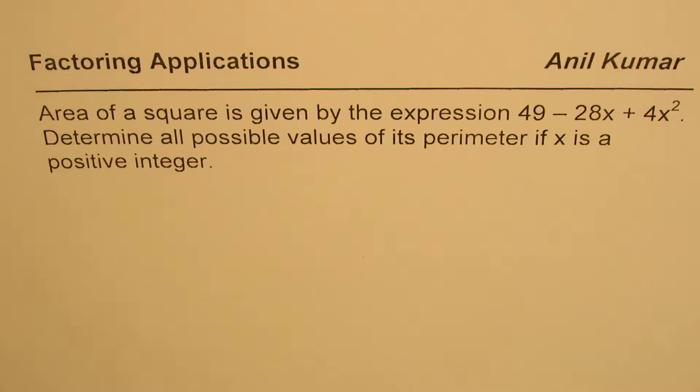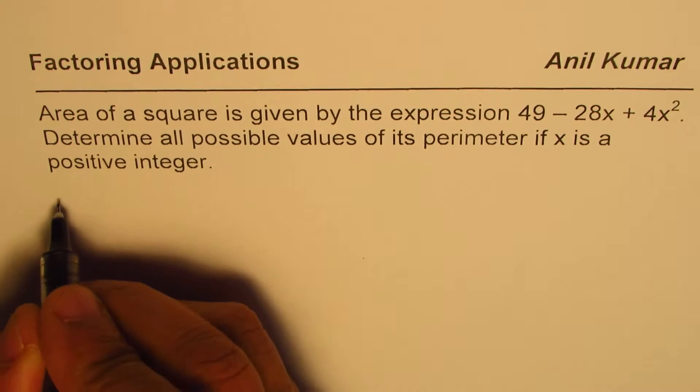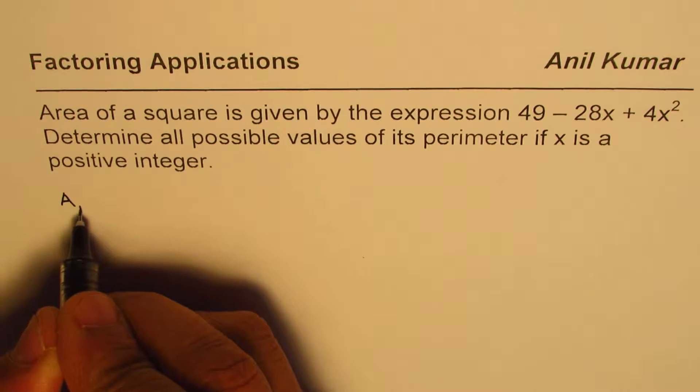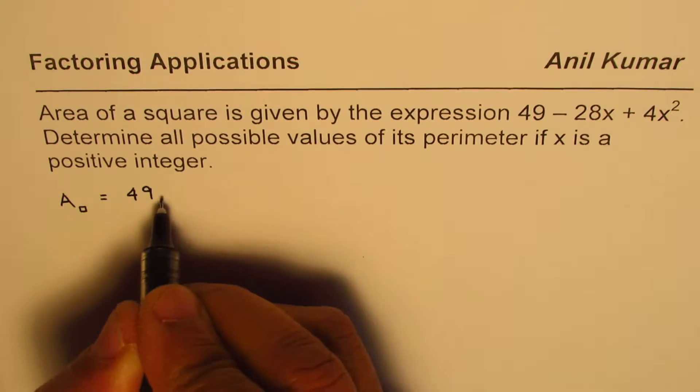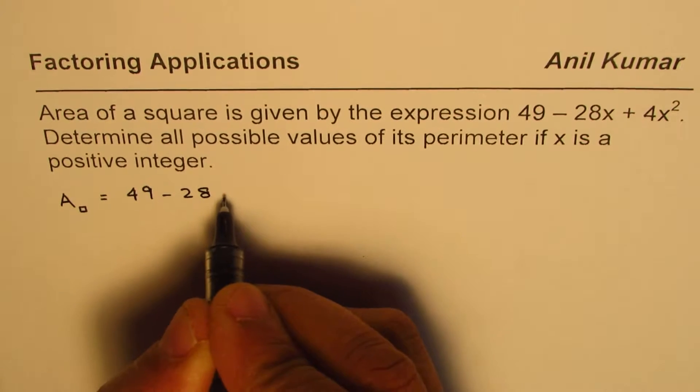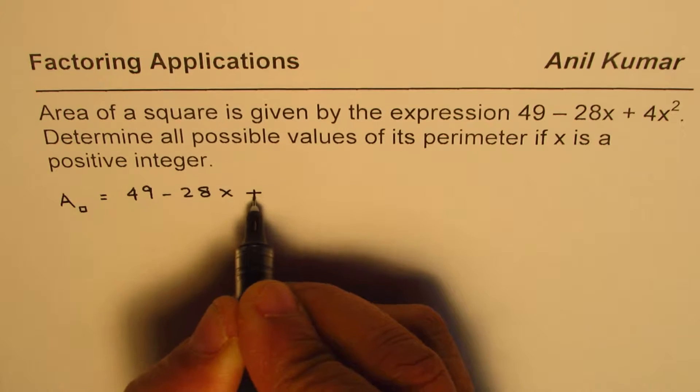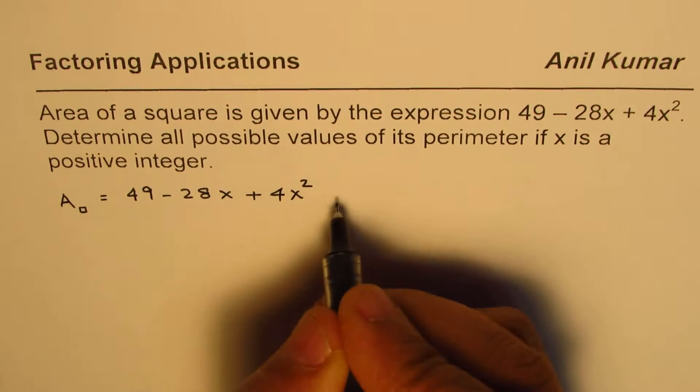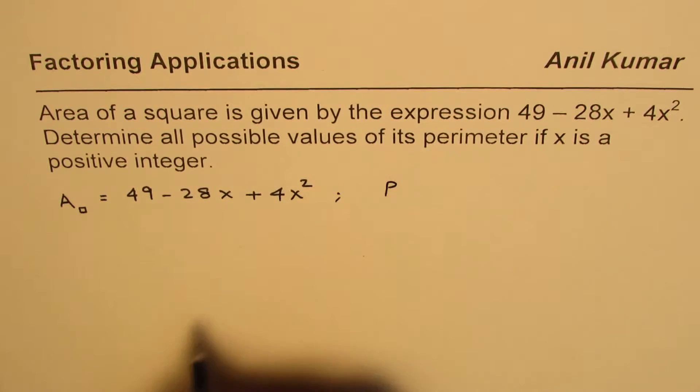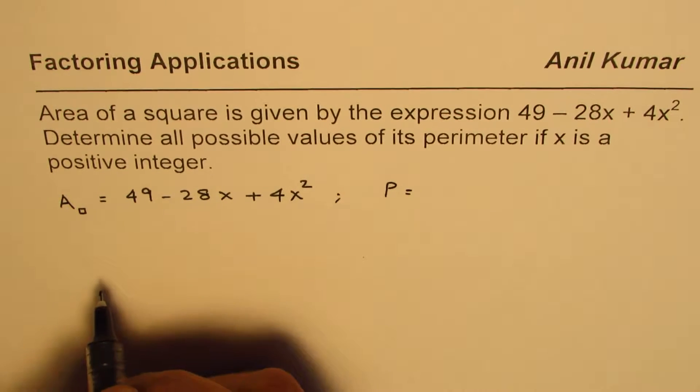You can pause the video, answer the question, and then look into my suggestions. We are given that the area of a square equals 49 minus 28x plus 4x squared. And what do we need to find? We need to find the perimeter.